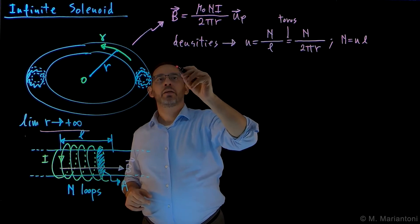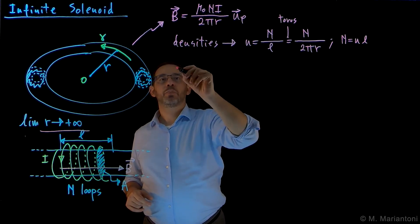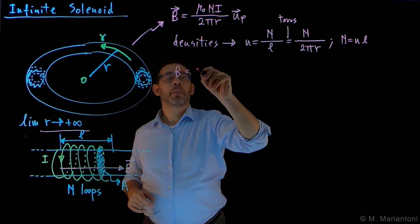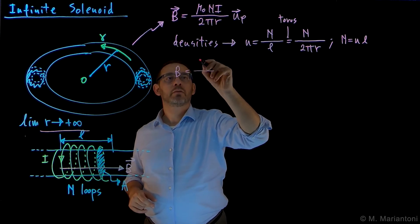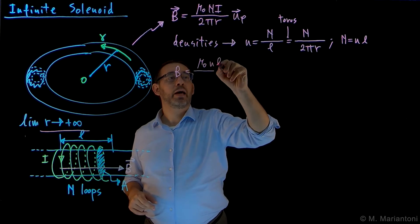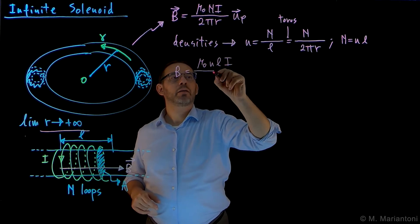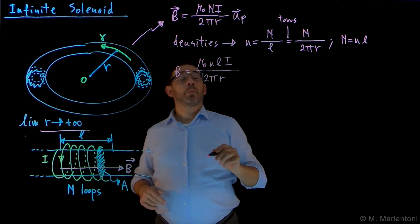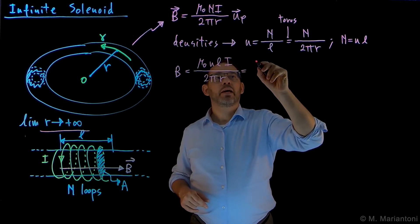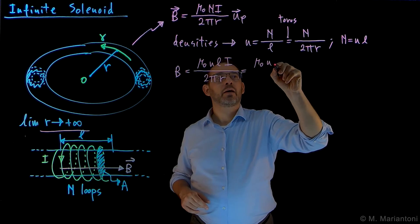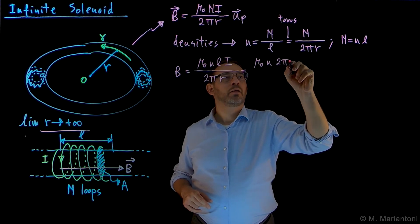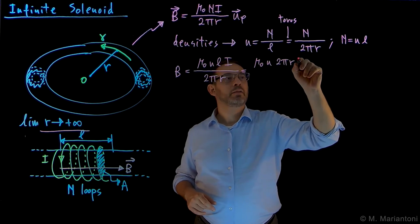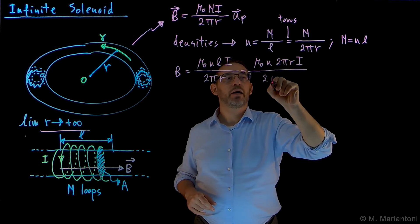Let's plug this in here, and so we end up having, for the magnitude of B, that the magnitude of B is going to be mu_0, capital N, which is small n L, times I, divided by 2 pi r. But this actually can be written as mu_0, and 2 pi r, which is L before doing the limit, times I, divided by 2 pi r.